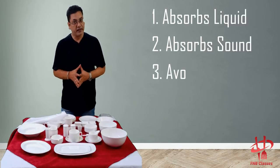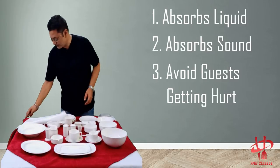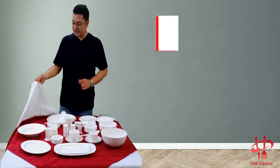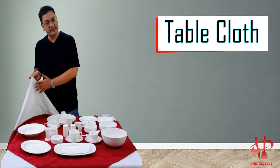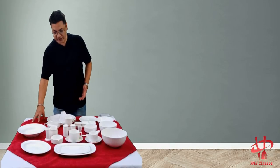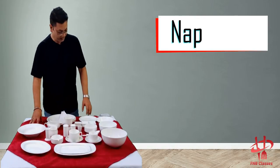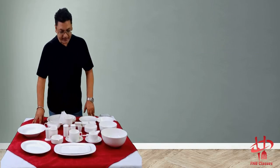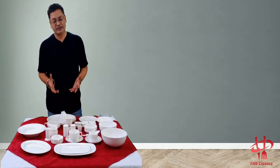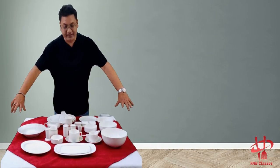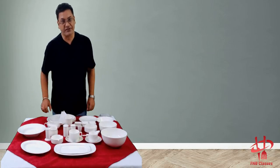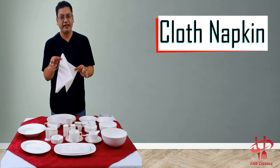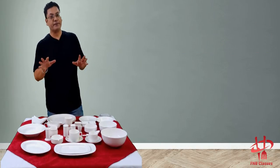A third important function of the moultone is that it avoids the guest getting hurt because of the sharp corners at the table. Another piece of linen is the tablecloth or table cover. We also have the napron — you can see this maroon cloth — also known as the slip cloth. Some hotels use runners instead: thick rectangular cloths which run across the table on both sides. We also have cloth napkins, which are again part of the linen category.